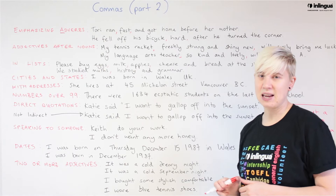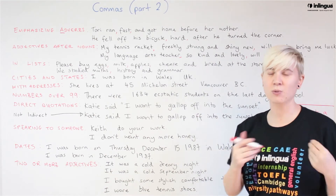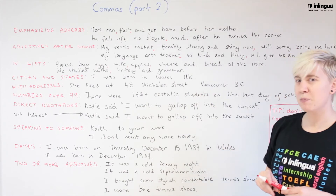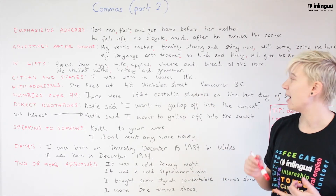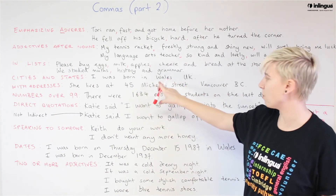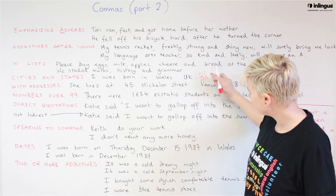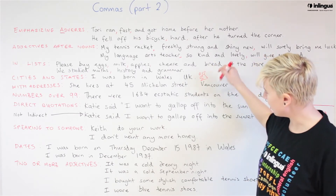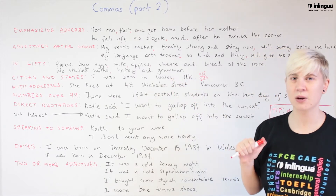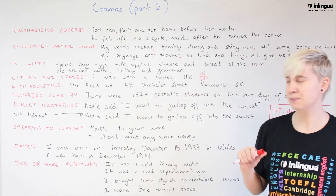Next up we have cities and states — really, any location words: towns, cities, countries. When we are given a list of locations, we always use commas to separate between those items. For example: 'I was born in Wales, UK.' Wales is a country and the United Kingdom is a group of countries together. Wales fits inside the UK, so it goes in front — in English we always start with the smallest thing for locations. So: Wales, comma, UK.